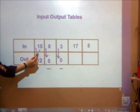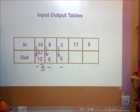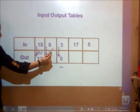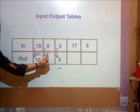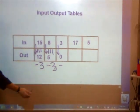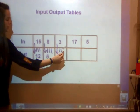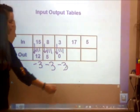15, 14, 13, 12. I'm taking away 3. 8, 9, 8, 7, 6, 5. I'm taking away 3. 3, 2, 1, 0. I'm taking away 3.